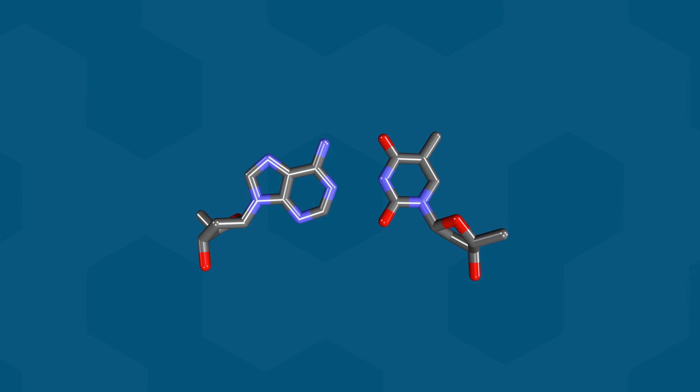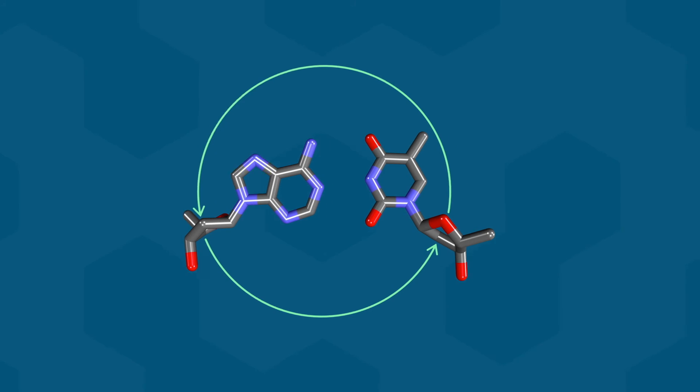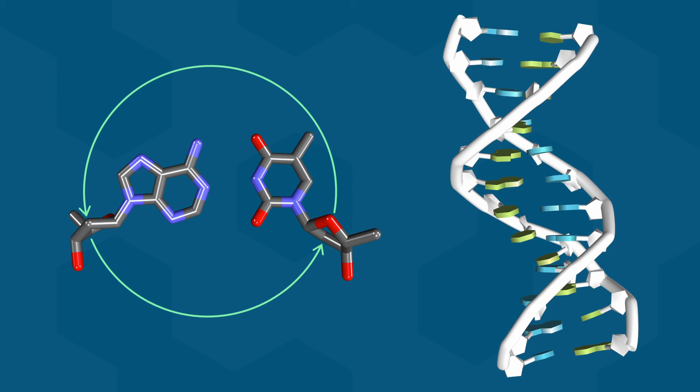This means that if we draw an imaginary circle around the base pair, the distance between the sugar groups is shorter on one side than the other. The result of this is that as the two DNA strands twist around each other, the backbones are always closer together on one side of the helix than the other. This creates two grooves of different sizes that run the entire length of the DNA helix. These grooves are referred to as the minor groove and the major groove.